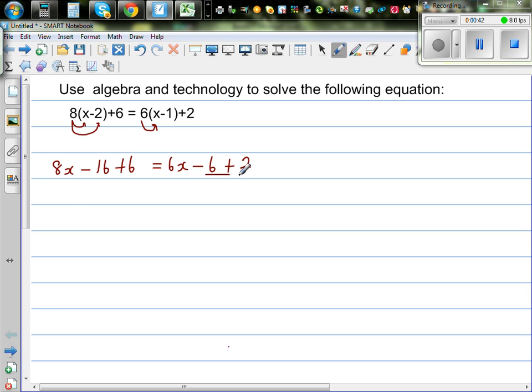So first let us simplify the left hand side. So this is 8x. This is negative 16 plus 6 is negative 10. Which is equal to 6x minus 4.